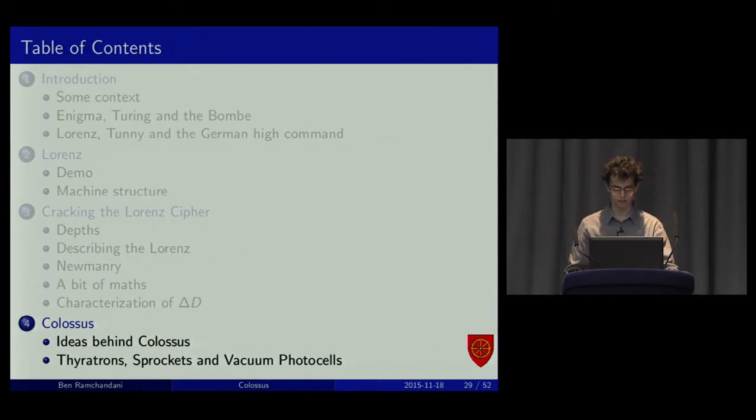Colossus. It was designed mostly by one man. Tommy Flowers was an engineer. He thought he could make a better machine that was purely electronic. It could run much faster. A lot of people at Bletchley Park didn't believe him. He thought it would be too unreliable. Which had never been done before. And valves were somewhat known to be unreliable.